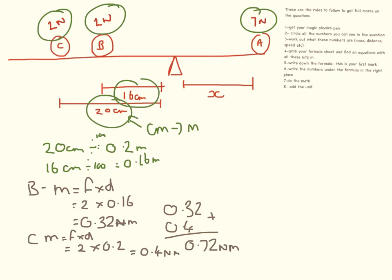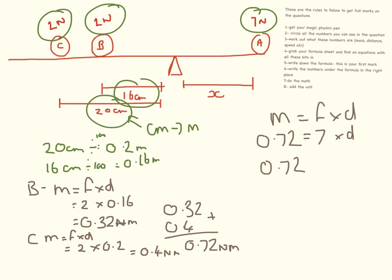Moving on to the other half: moment equals force times distance. The force is 7, and the distance is unknown, but we know the moment is 0.72 newton metres because the system is balanced. So 0.72 divided by 7 equals our distance, which is 0.1 metres.